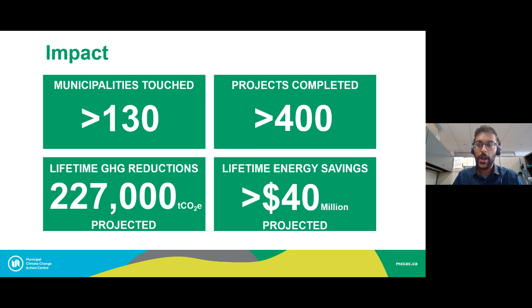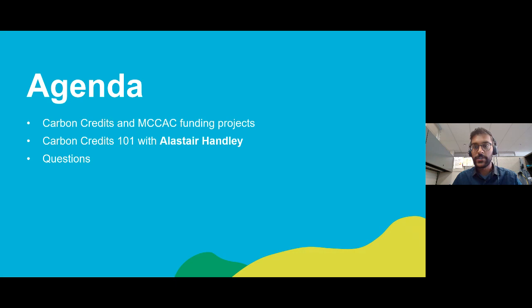We're quite proud of what we've accomplished over the last decade. I'll highlight the lifetime greenhouse gas reductions at our projected 227,000 tons of CO2 equivalents — about the same as taking 44,000 cars off the road for one year. We'll be talking more about emission reductions today, specifically when emissions are reduced and we're able to assign them a dollar value, which turns them into carbon offset credits.